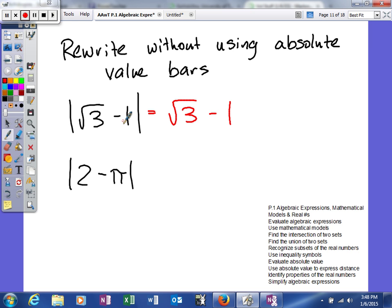Well if you look down here at the bottom one, it says 2 minus pi. Well 2 minus pi is going to be like negative 1.14. Well the absolute value of that will be a positive 1.14.